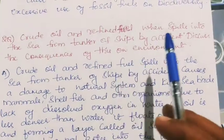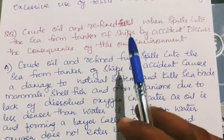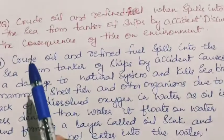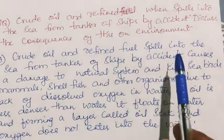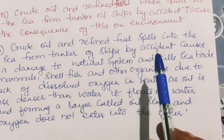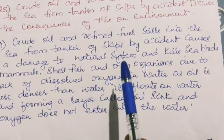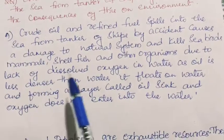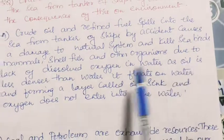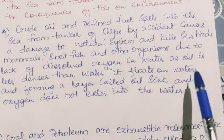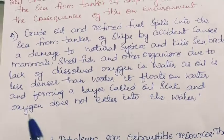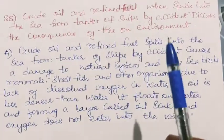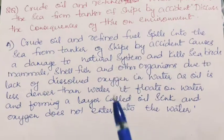Next question: when crude oil and refined fuel spill into the sea from tankers by accident, discuss the consequences on the environment. Oil spills cause damage to natural systems and kill seabirds, mammals, shellfish, and other organisms due to lack of dissolved oxygen in water. As oil is less dense than water, it floats and forms a layer, preventing oxygen from entering the water. This causes the death of aquatic animals. Thank you, children.